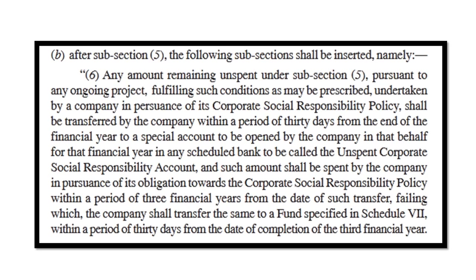After sub-section 5, the following sub-sections shall be inserted. Sub-section 6 states that in case any amount is unspent regarding an ongoing project, unless it is related to any ongoing project, you can transfer that amount to a fund specified in Schedule 7.